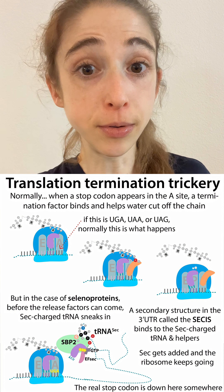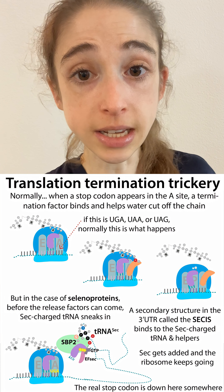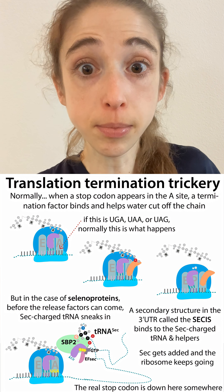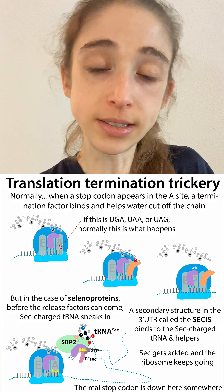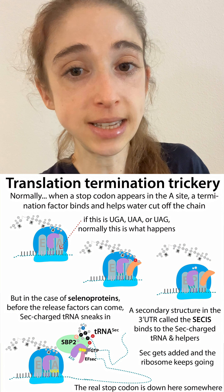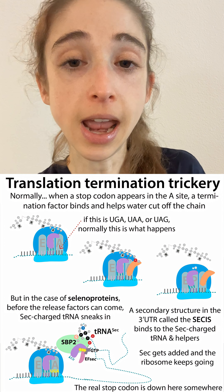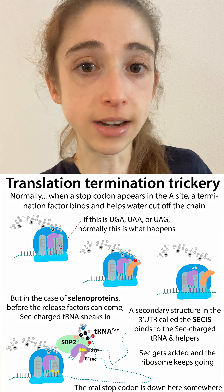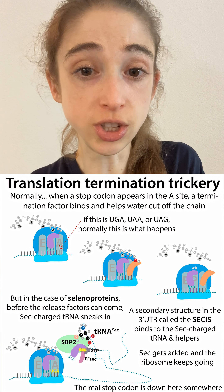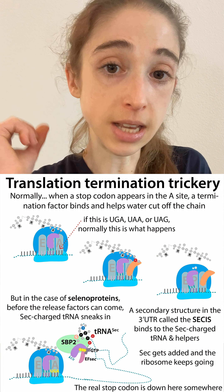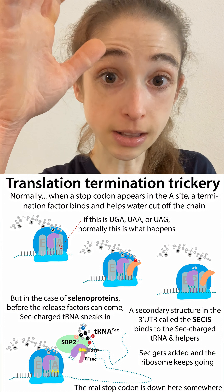Another great example is selenocysteine incorporation. Selenocysteine is a rare amino acid but it's important in some proteins. The way it's incorporated into proteins is by taking over the stop codon UGA and incorporating a selenocysteine instead. Normally when you reach a UGA, a release factor comes and cuts off the growing peptide to release the protein that was made.